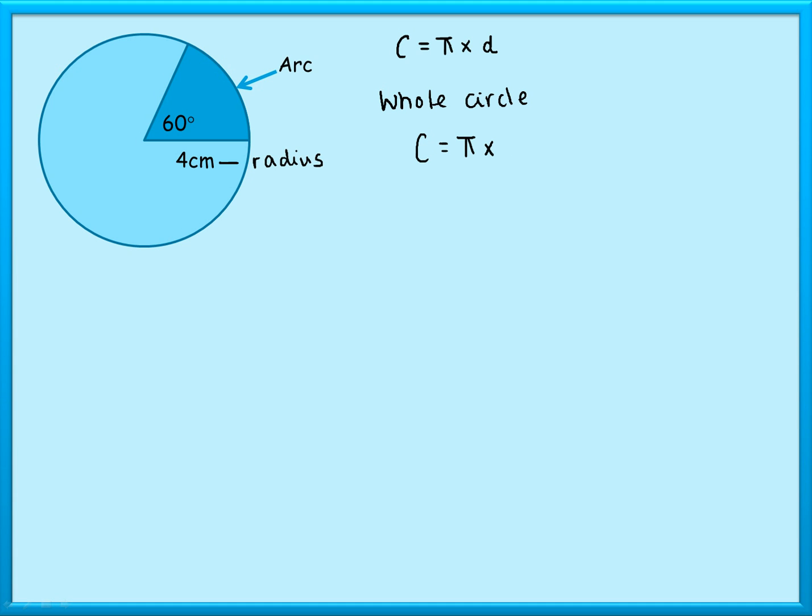then the diameter would be double that, so the diameter would be 8 centimeters. So I'm going to do π times 8, and if I work that out that would be about 25.1 centimeters, and that's rounded to one decimal place.